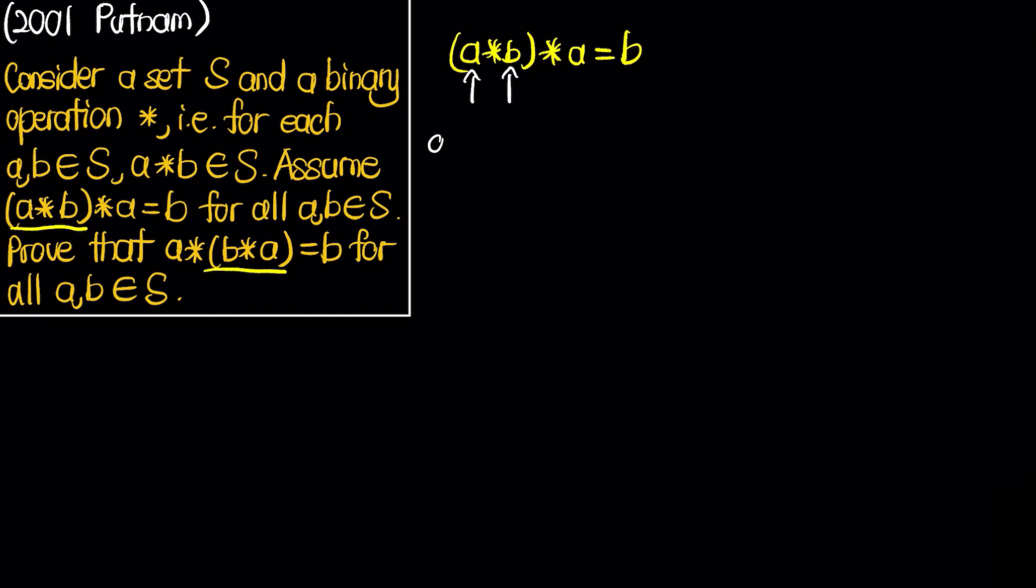We'll replace A with B star A and B will be kept the same. So what we'll get is (B star A) star B star (B star A).